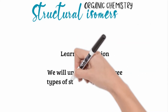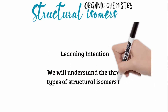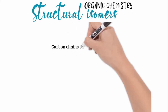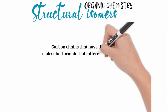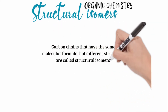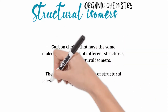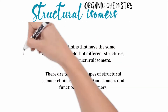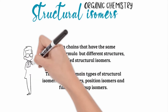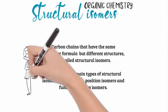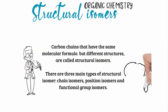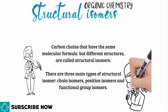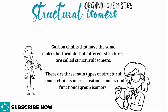In this video we are going to look at carbon chains and the three different types of isomers that we can have. Carbon chains that have the same molecular formula, which means they would have the same number of carbon and hydrogen atoms, but different structures, are called structural isomers. There are three main types of structural isomers: chain isomers, position isomers, and functional group isomers.